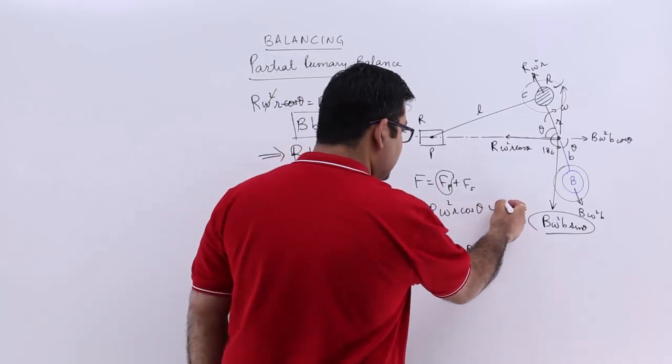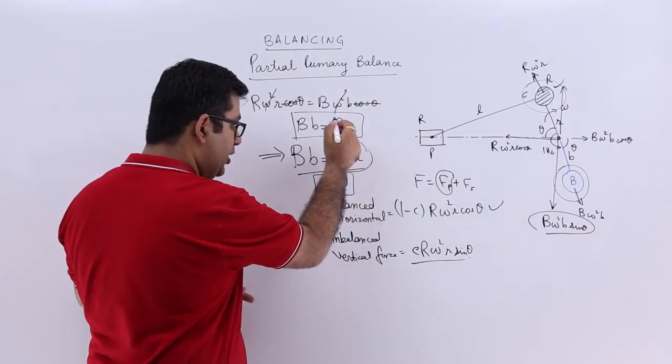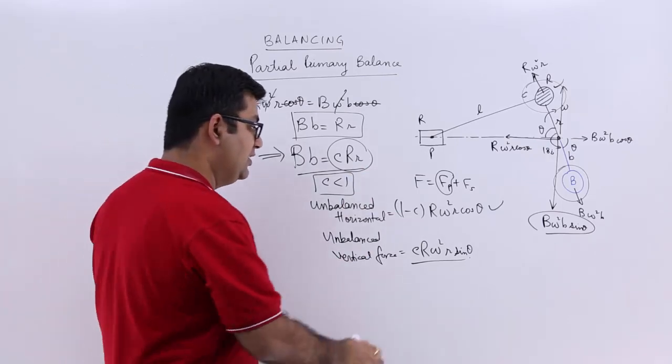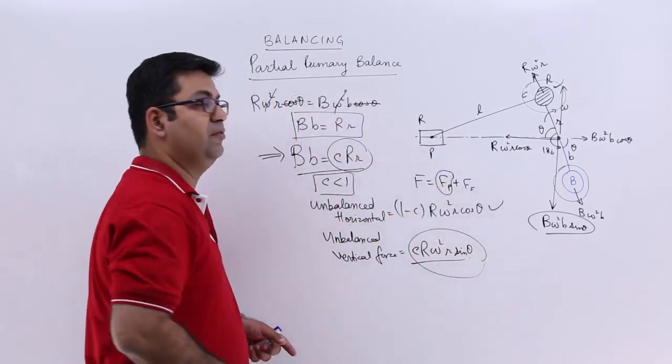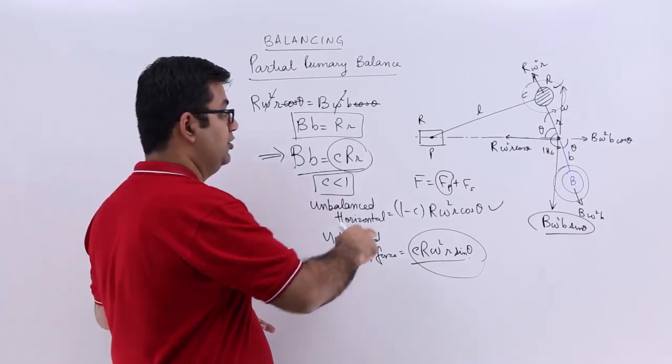So this is the unbalanced horizontal force that is left after the partial horizontal force is balanced. And this is the unbalanced vertical force, which is perpendicular to the line of action or the line of stroke.